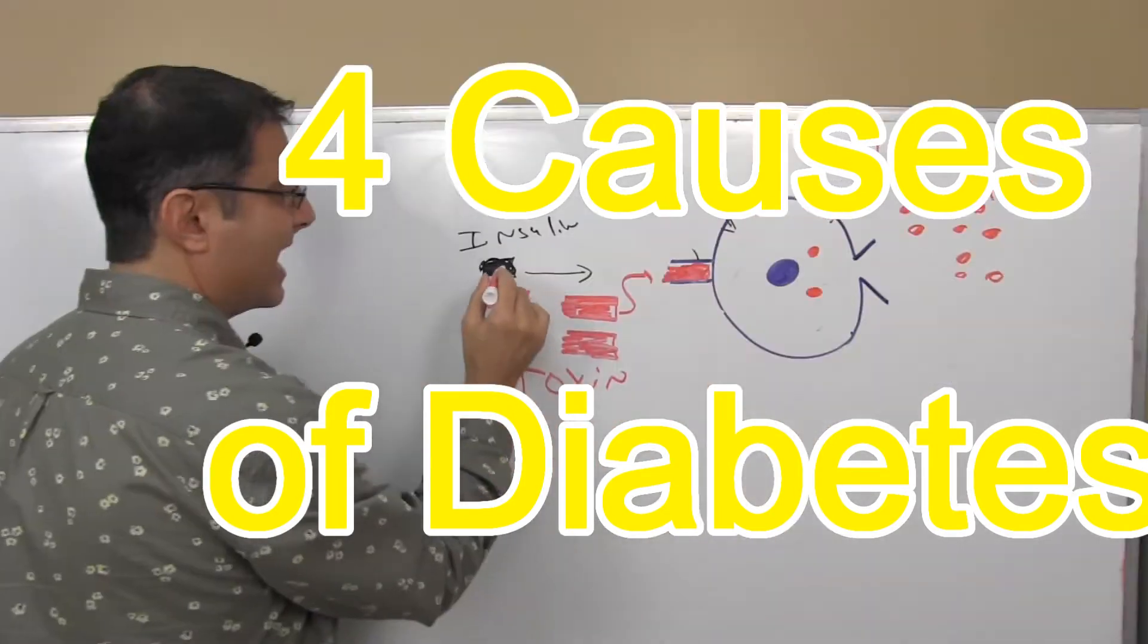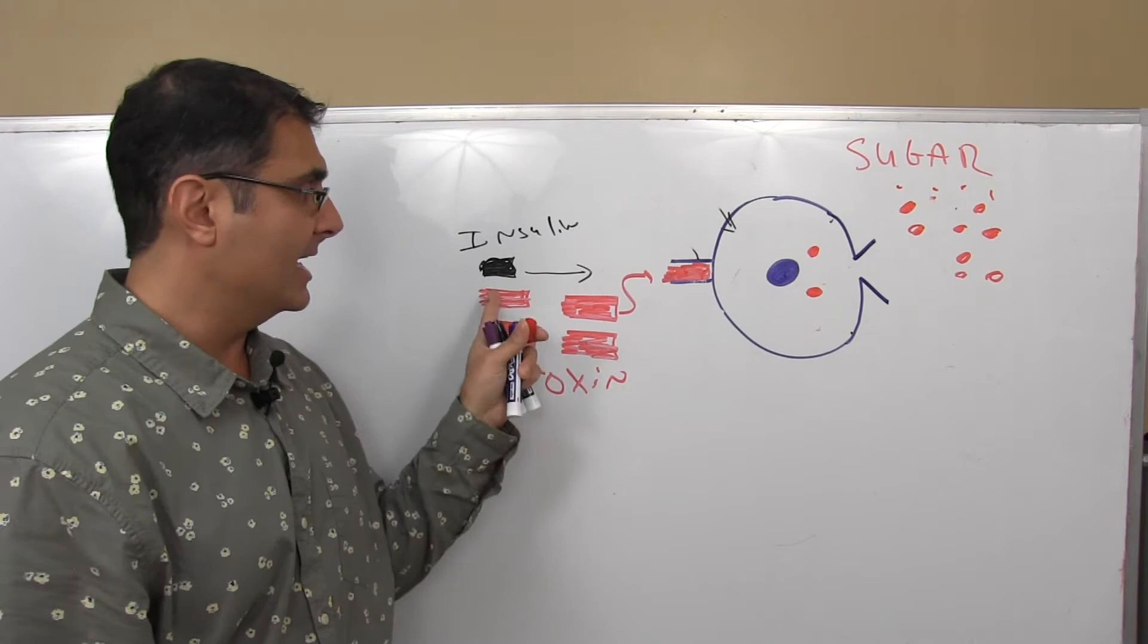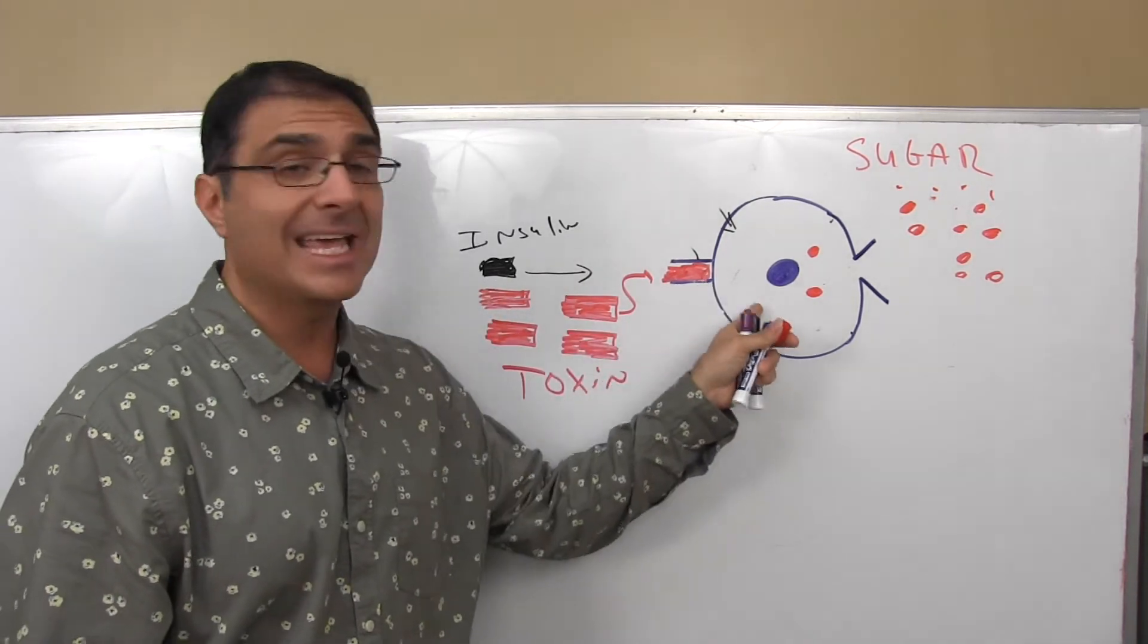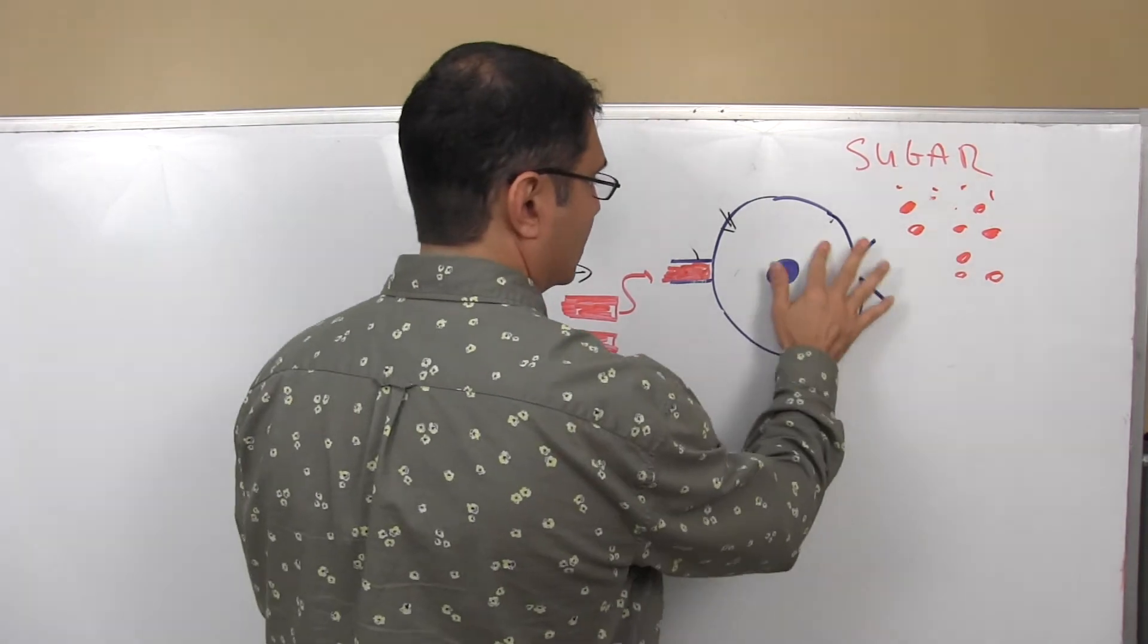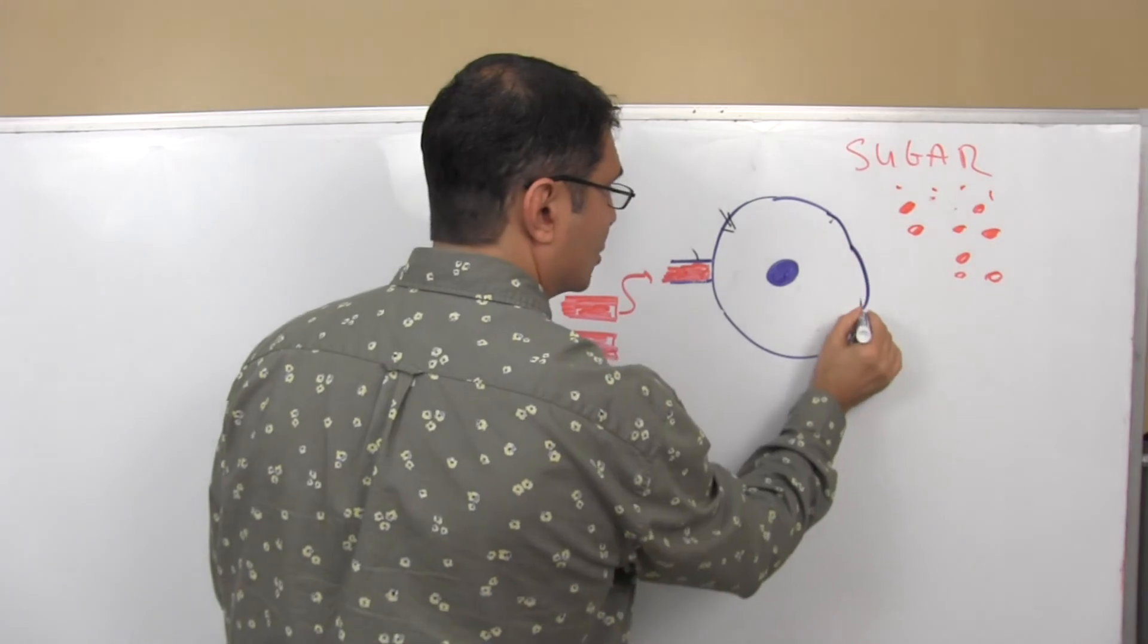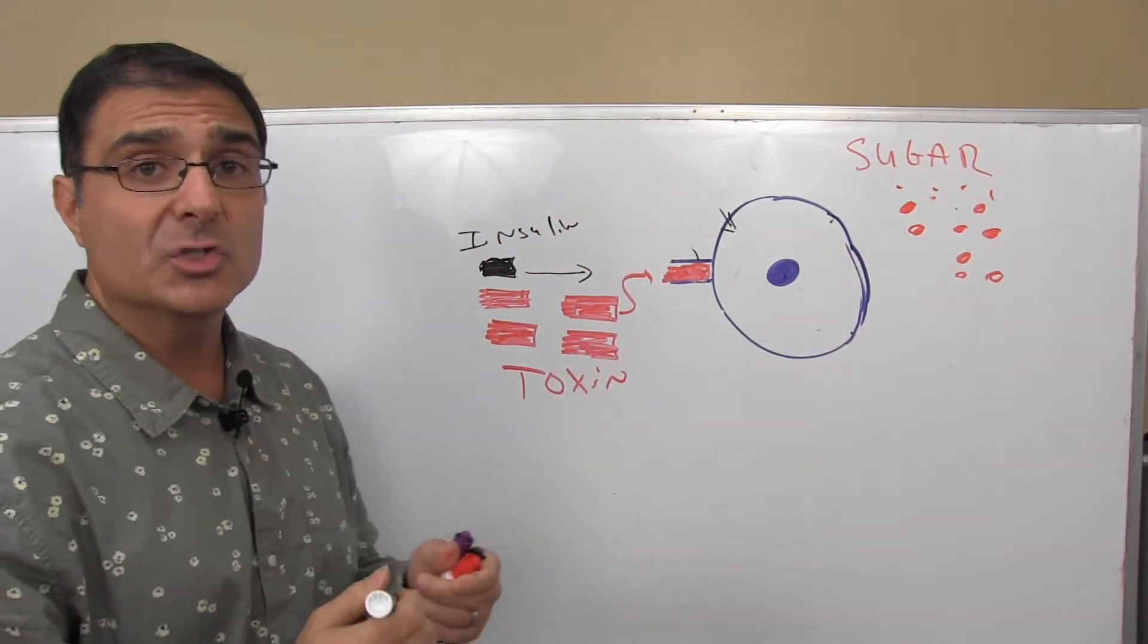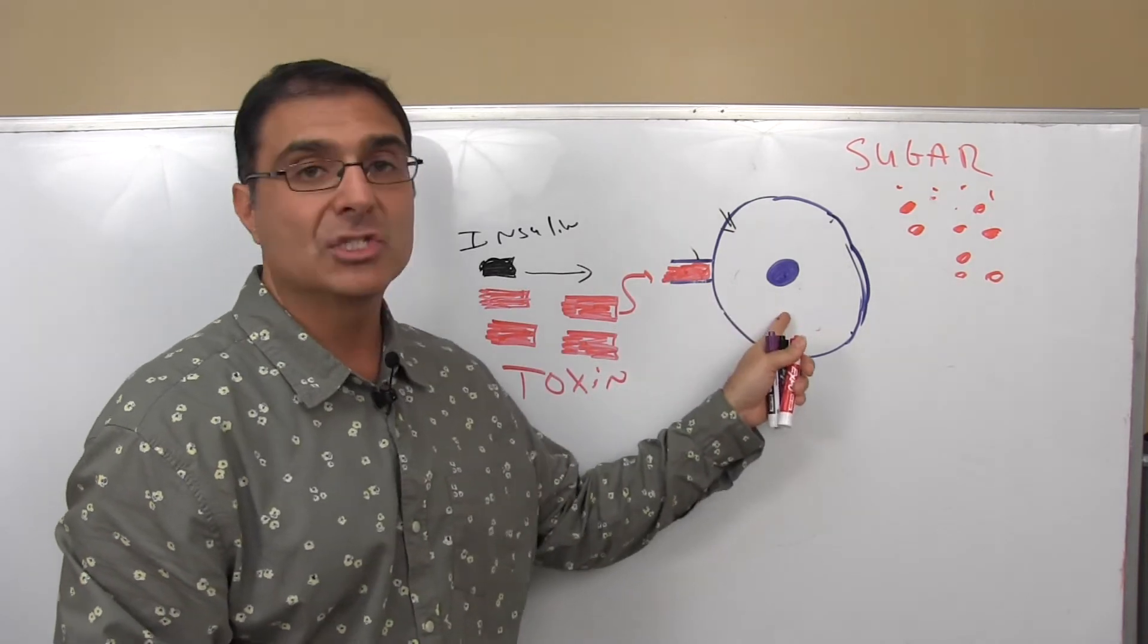Now we got a problem because if that insulin can't get into that receptor, big problem. If that insulin can't get into the receptor, then it can't tell that cell to absorb sugar. Then guess what? We're not getting any sugar getting absorbed. And now we have a condition of type 2 diabetes, which is our blood sugar is too high, but not because we're not making enough insulin. It's because the insulin can't get the message to the cell.